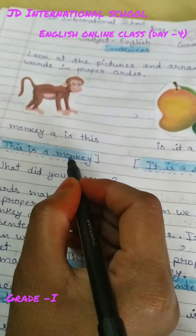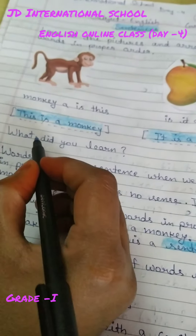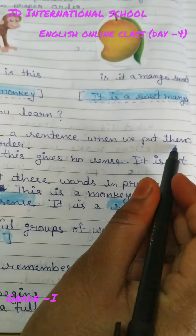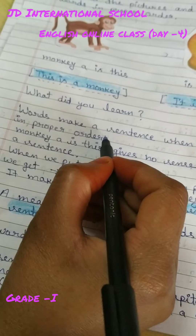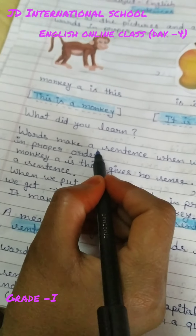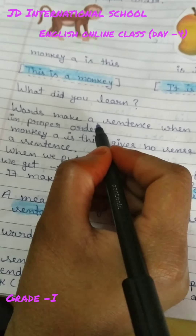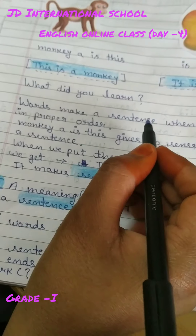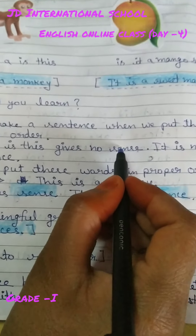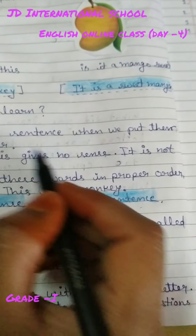Now we can understand both sentences. Words make a sentence when we put them in proper order. 'Monkey a is this' gives no sense — it is not a sentence. But 'This is a monkey' — that is a sentence.